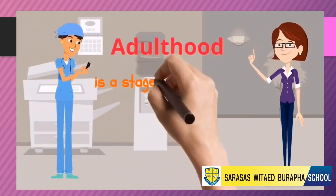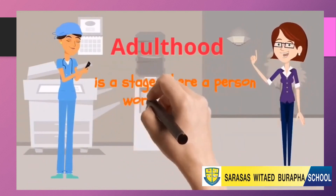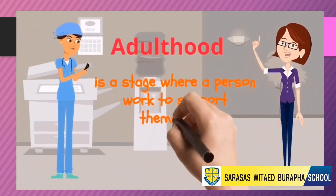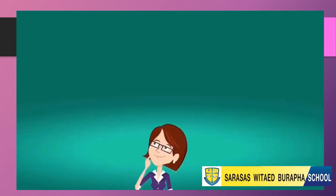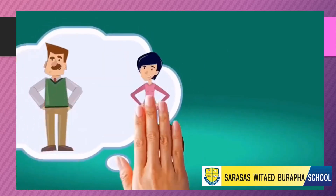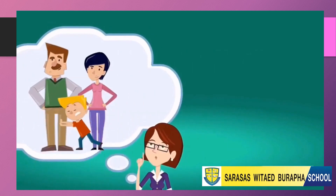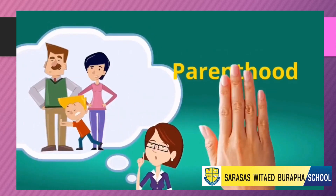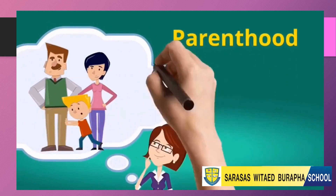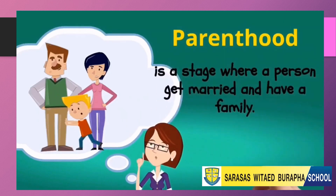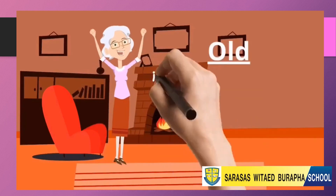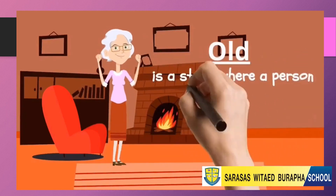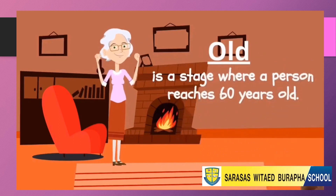Adulthood is the stage where a person works to support themselves. Parenthood is the stage where a person gets married and has a family. Old age is the stage where a person reaches 60 years old.